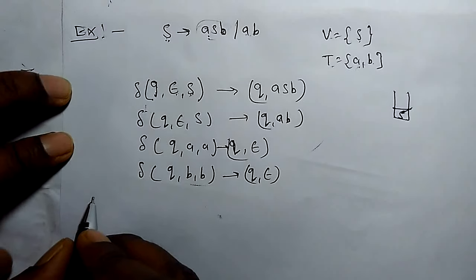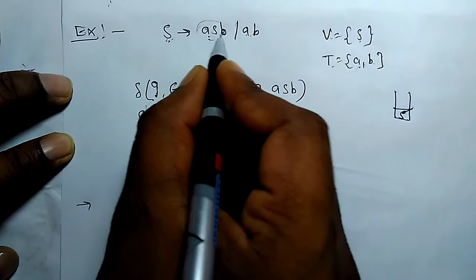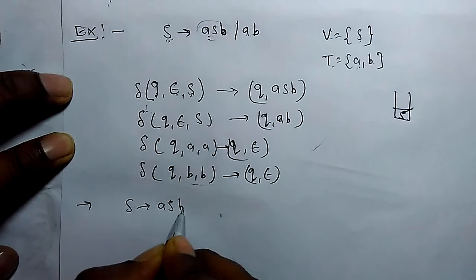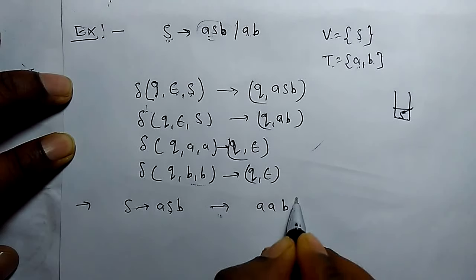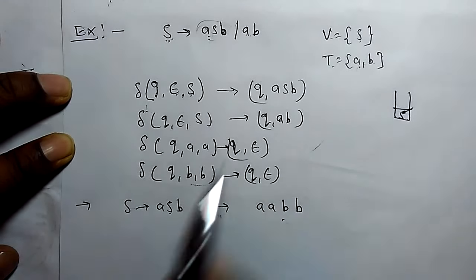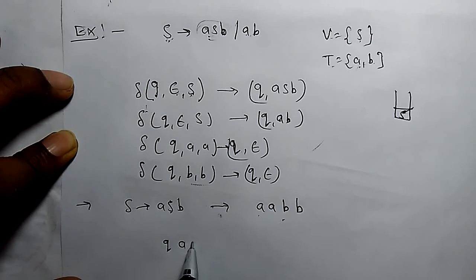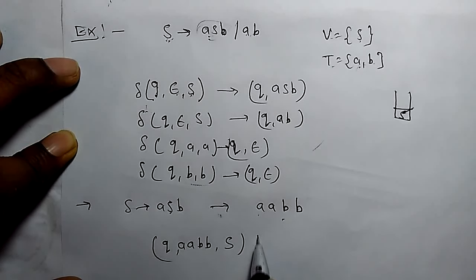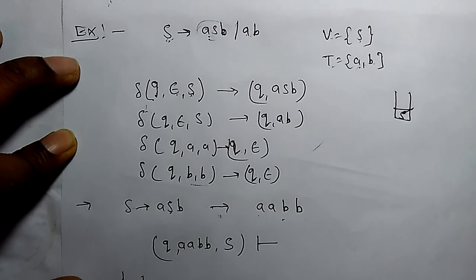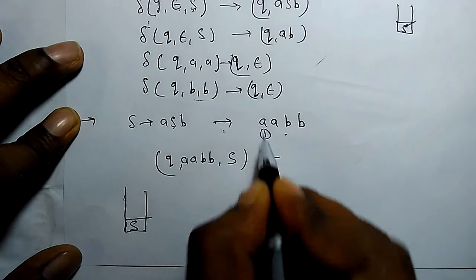Let's take an example. One string for this grammar: if S derives ASB and we replace S by AB, the string generated will be AABB. Let's check whether this string is accepted by this machine or not. We start reading at state Q. AABB is the input and S is the first symbol inserted in the stack.